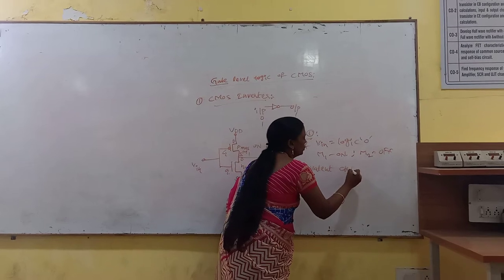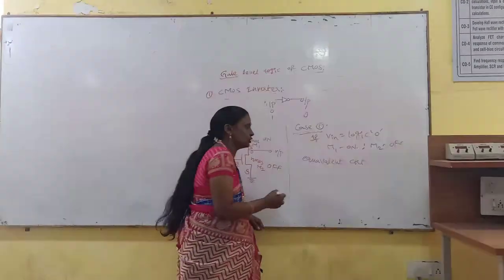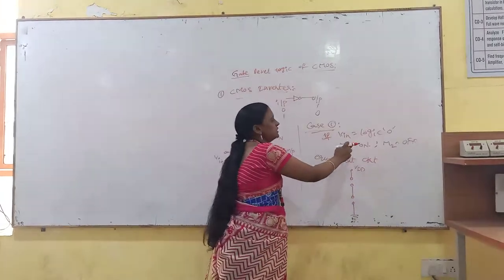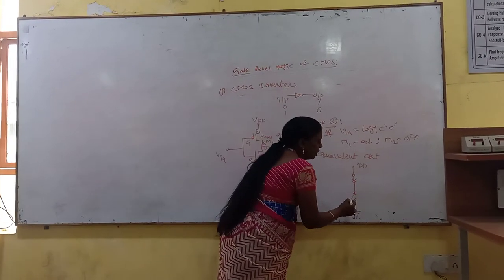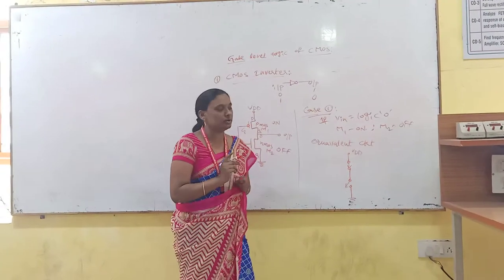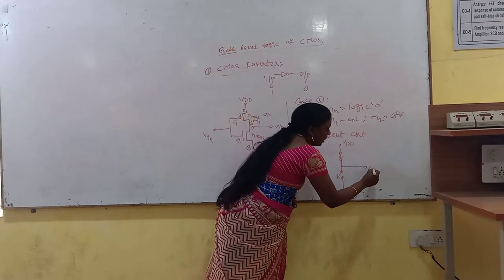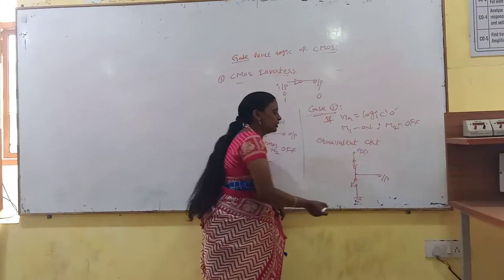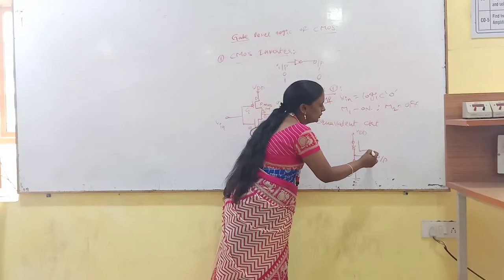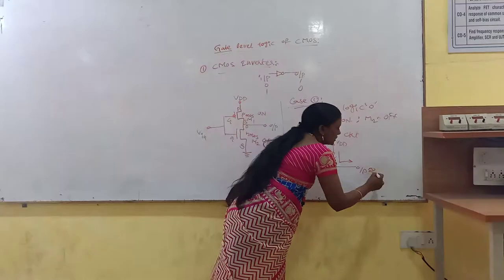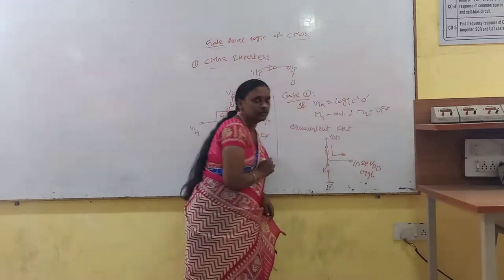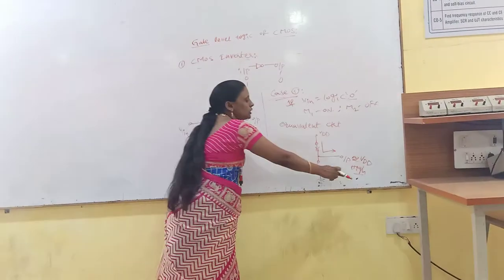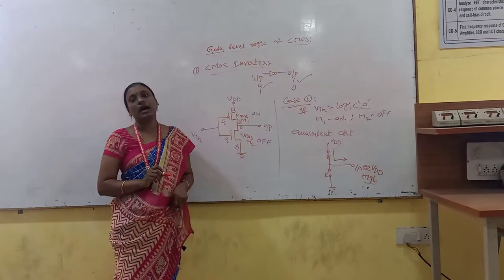For the equivalent circuit of Case 1, when VIN is logic 0: VDD is connected, PMOS M1 is in conduction state (short circuit) and NMOS M2 is in off state (open circuit). So VDD is connected to the output terminal. Current flows from maximum to minimum, and since M2 is not connected to ground, total voltage flows to the output. So output is approximately VDD — that is logic high. So input 0 gives output 1. That is Case 1.